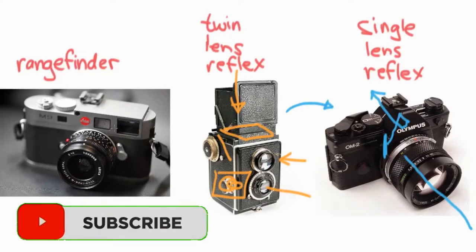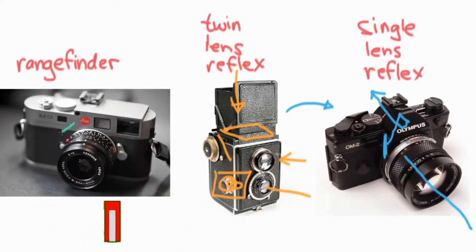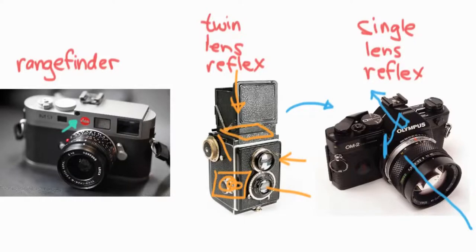That's the rangefinder. This Leica happened to be a very important company in developing a great rangefinder, and it was sort of the professional favorite of a lot of photographers. On the rangefinder, instead of seeing through the camera lens like on a single lens reflex, you're looking through a separate viewfinder.